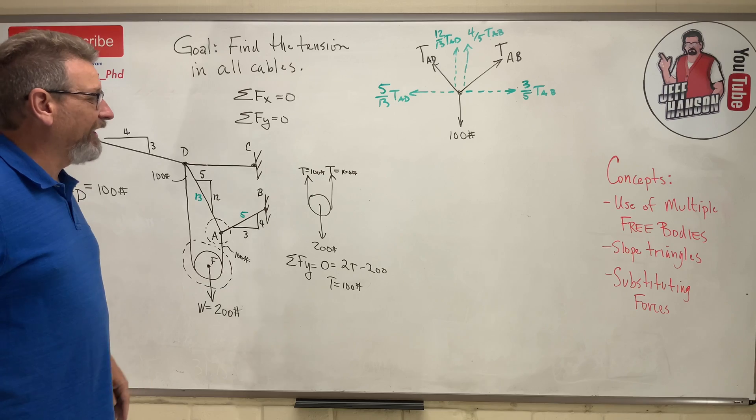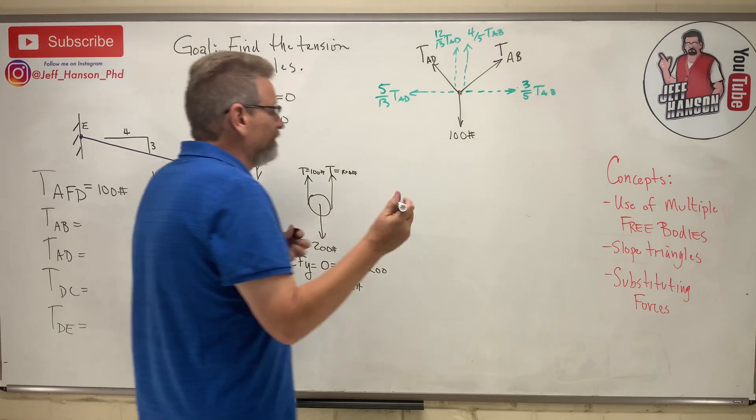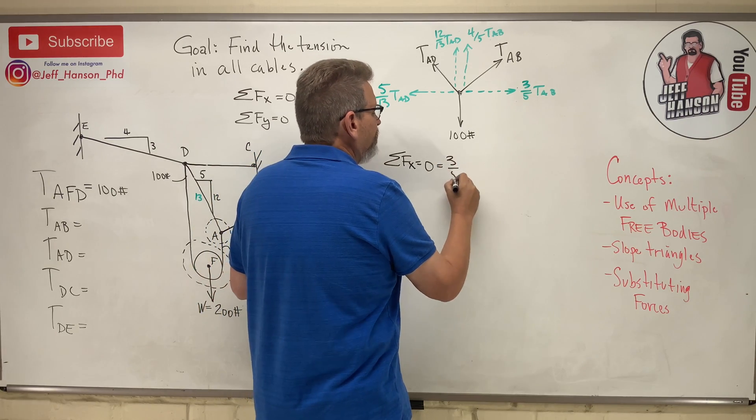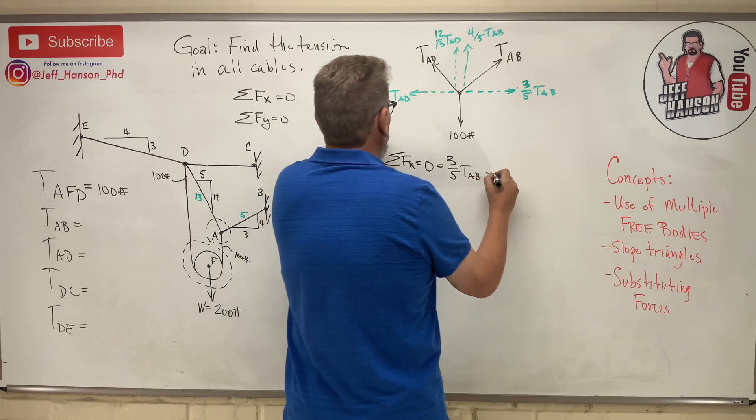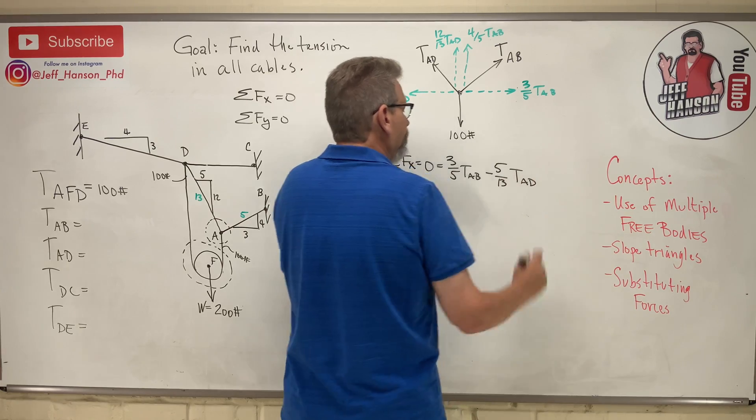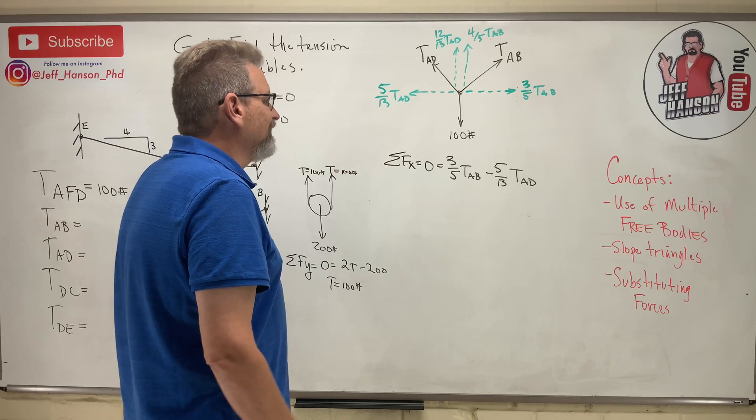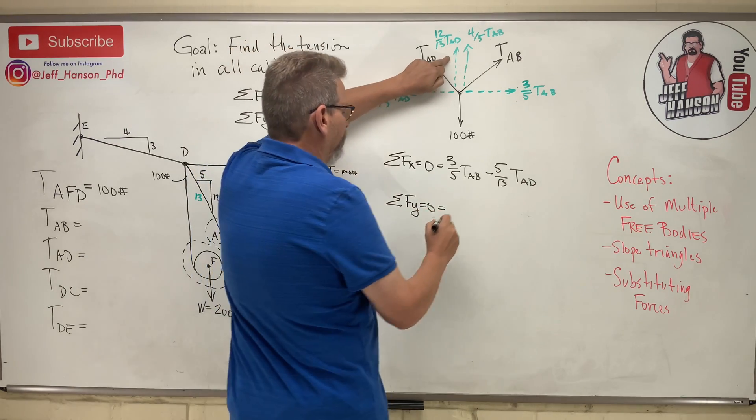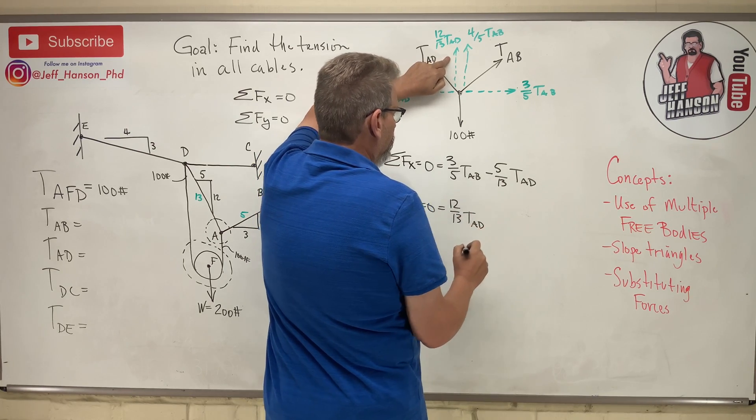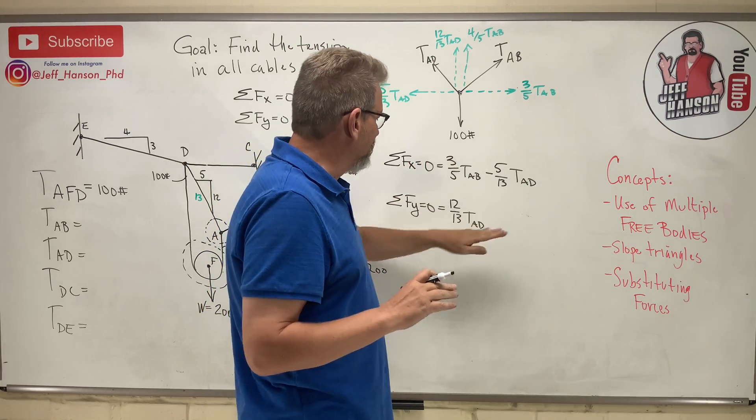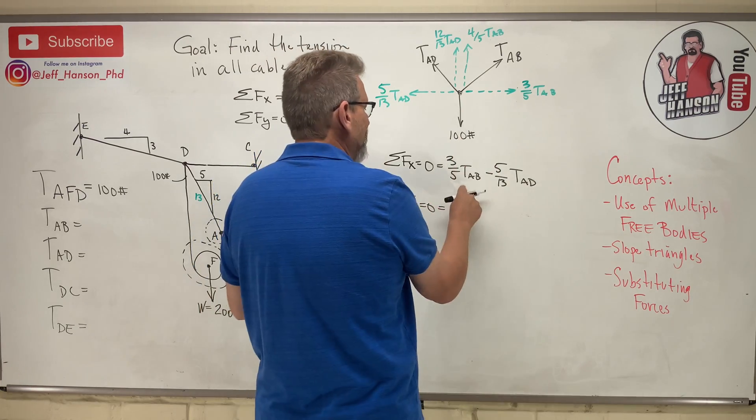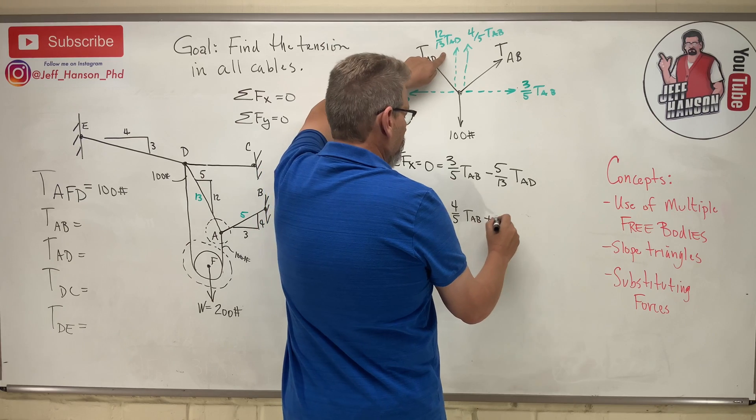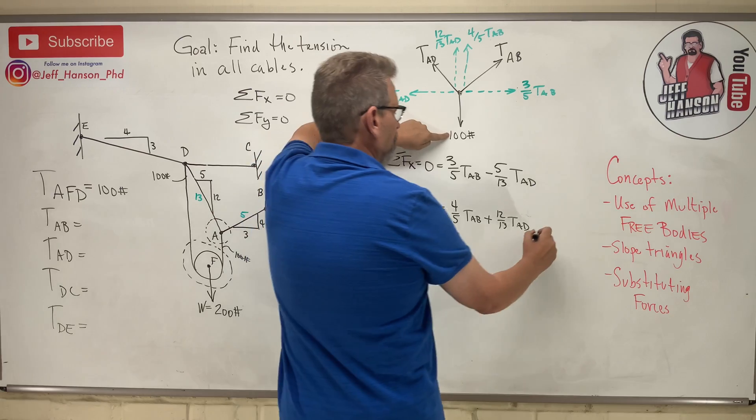And that, boy, look how easy, once you get that labeled, how easy is it going to be to write the forces in the X and the forces in the Y? Easy, cheesy, lemon squeezy. Sum of the force in the X equals zero equals what? 3 fifths TAB minus this guy, minus 5 thirteenths TAD. It looks like two equations, two unknowns, doesn't it? Sum of the forces in the Y equals zero equals what do we got in the Y? I got these two guys going uphill. I want to keep these in nice orderly columns. So I'm going to put the AB first because it's AB first here. So four fifths TAB and then plus this guy, plus 12 thirteenths TAD and then finally minus 100.